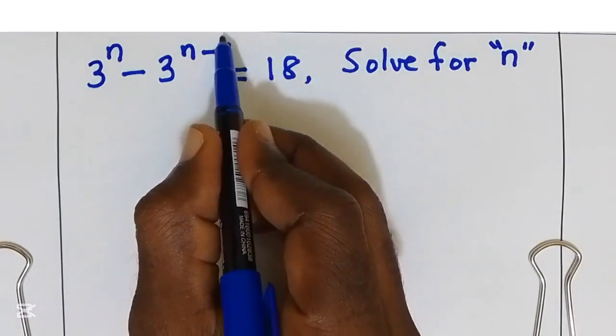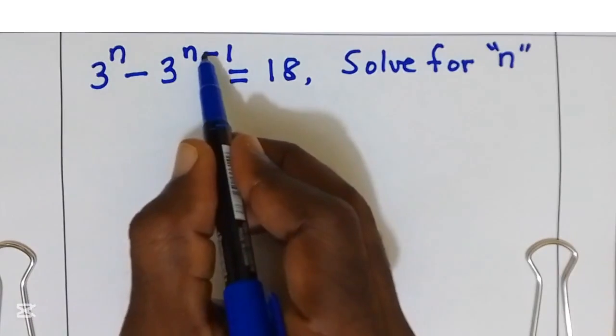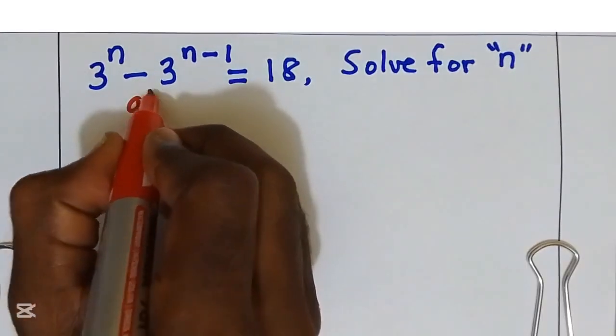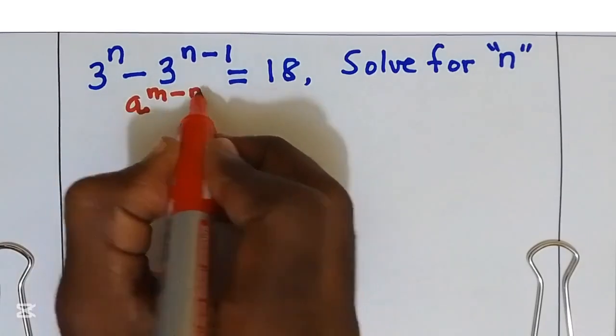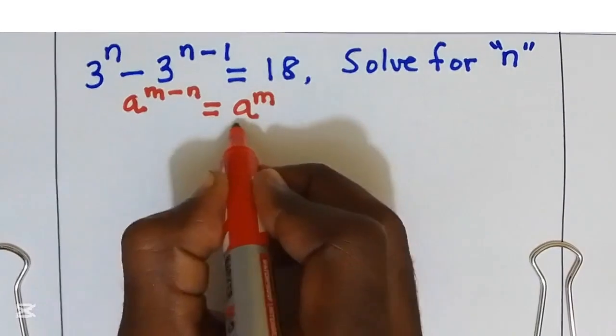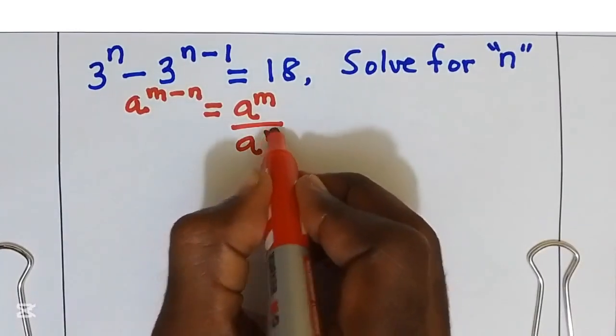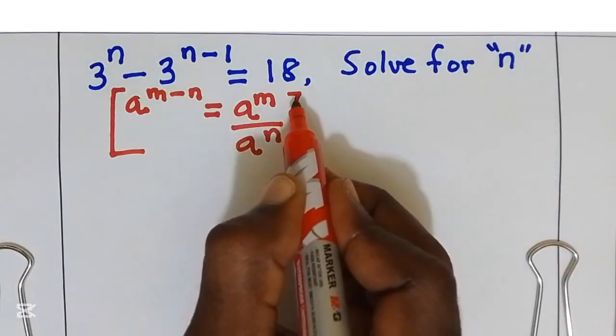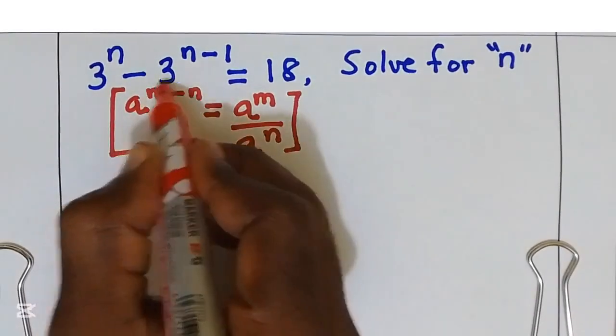First I'm going to split 3 power n minus 1. We do know that if we have a power m minus n, this is equal to a power m over a power n. I'm going to use this exponential rule over here.